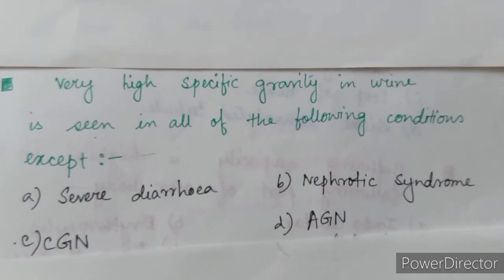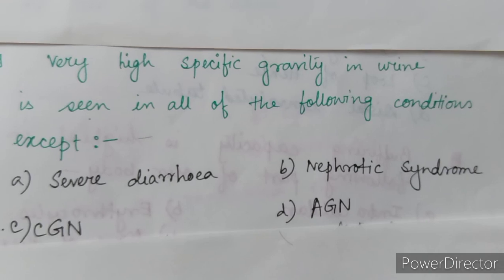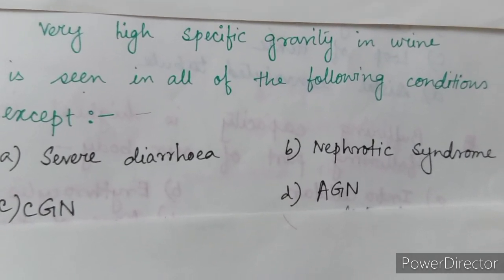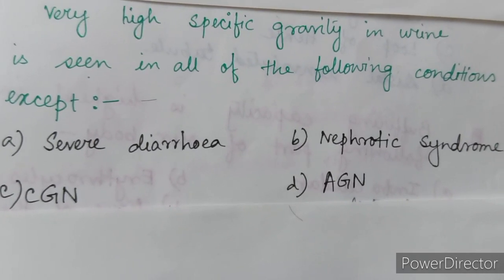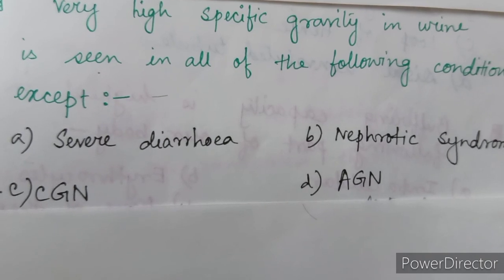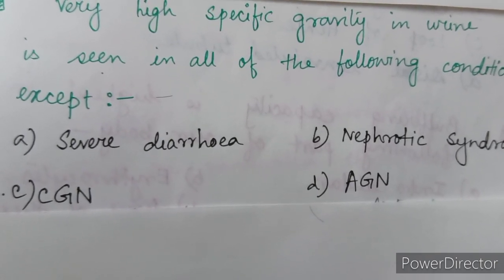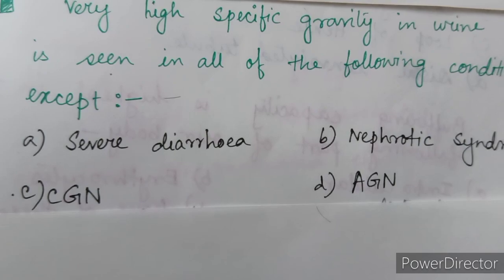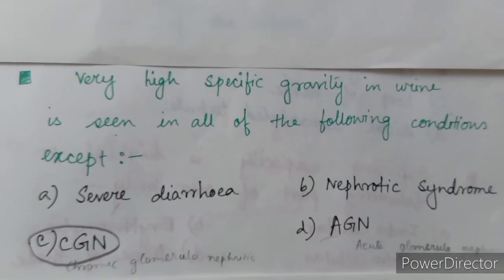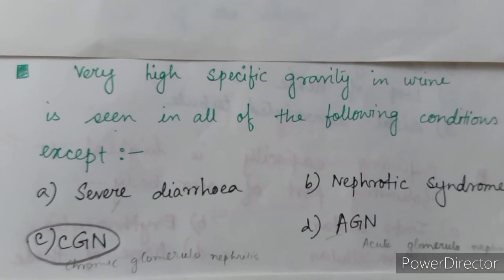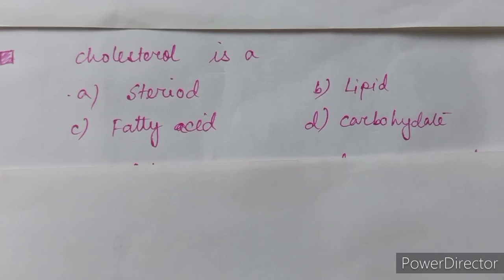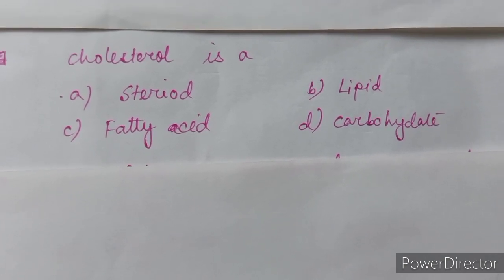Next question: very high specific gravity in urine is seen in all of the following conditions except — A: severe diarrhea, B: nephrotic syndrome, C: CGN, D: AGN. CGN means chronic glomerulonephritis and AGN means acute glomerulonephritis. The correct answer is option C: CGN — chronic glomerulonephritis.